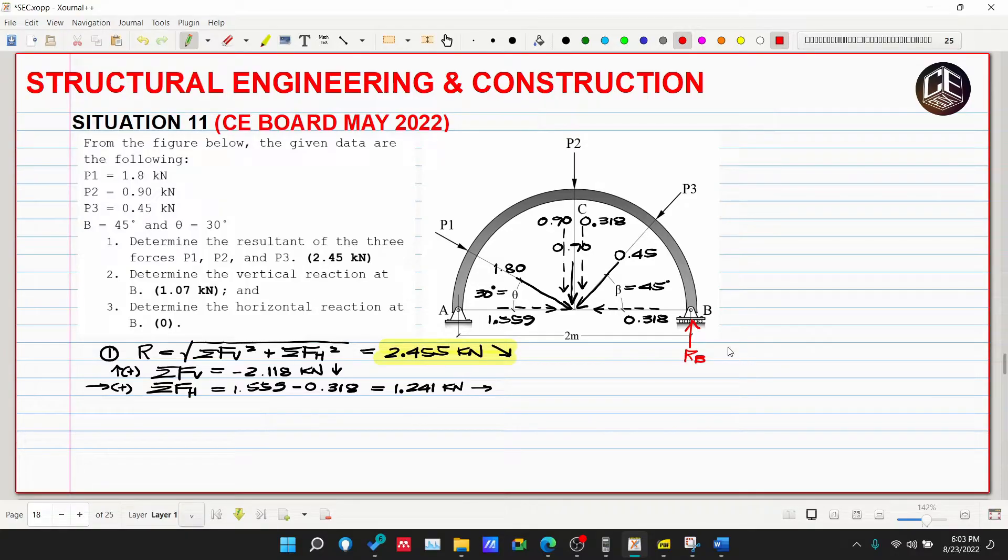Actually dito sa number 3 na tanong, determine the horizontal reaction at B, wala naman tayong horizontal reaction at B since this is a roller. Not unless kung ang ating surface is naka-inclined, merong vertical and horizontal component reaction na RB, kaso hindi, naka-horizontal lang sya kaya vertical lang ang kanyang reaction. Yung merong horizontal reaction is yung pin A, so this is AV and this is horizontal reaction AH.